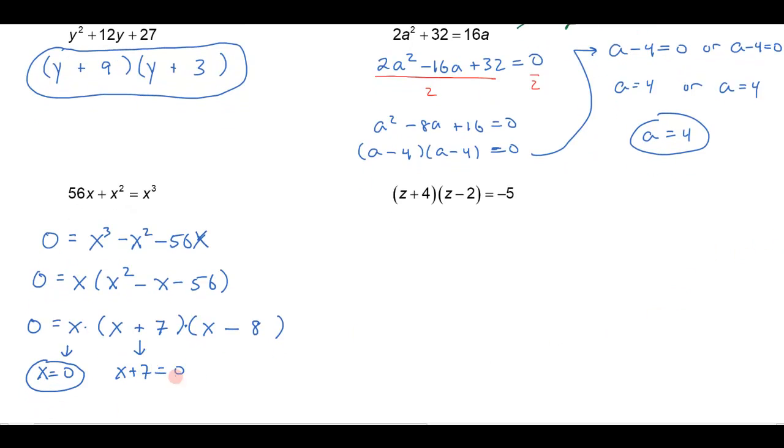Or x plus 7 is 0, and if x plus 7 is 0 that would make x be a negative 7, or the third number would be x minus 8. So that'd make x equals 8.